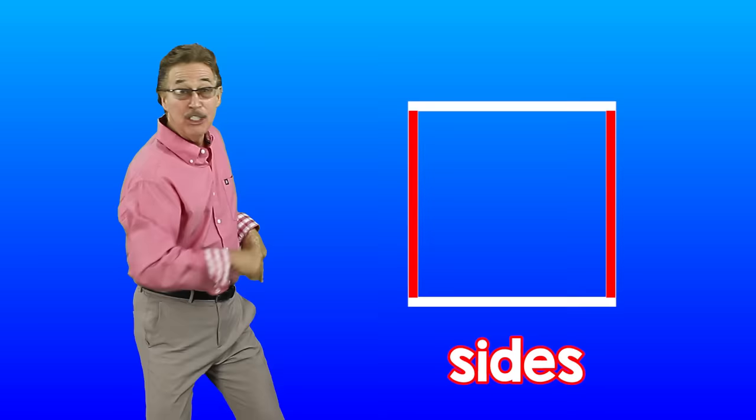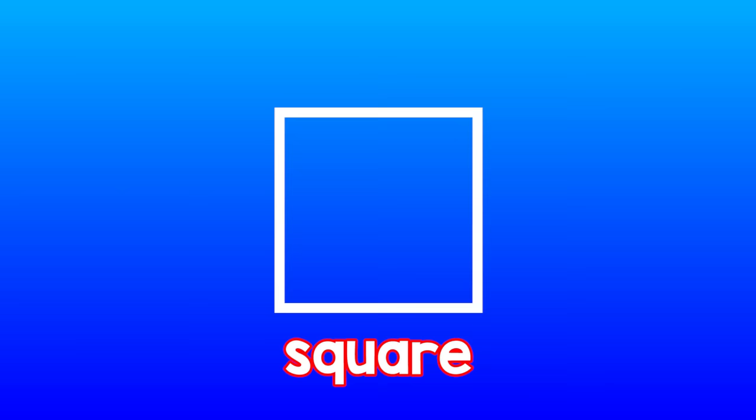Sides are the straight lines that form the shape. Vertices are the corners that the two lines make. Let's move and count the sides and vertices of these 2D shapes. This is a square. Let's move and count the sides of a square.